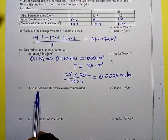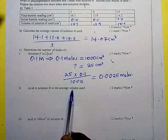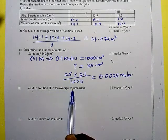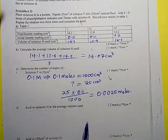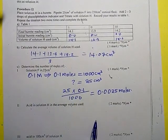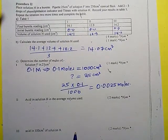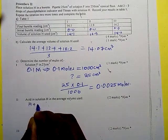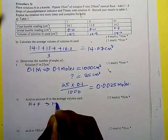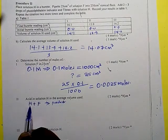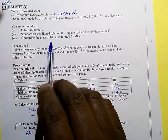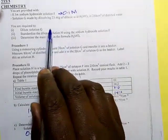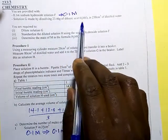Next, determine the number of moles of the acid in solution H in the average volume. We don't have direct information, so we will use the reaction between H and F to find the moles. H is the dibasic acid — it is solution G that has been diluted, so the formula remains H₂MO₆, and it reacts with F, which is sodium hydroxide.